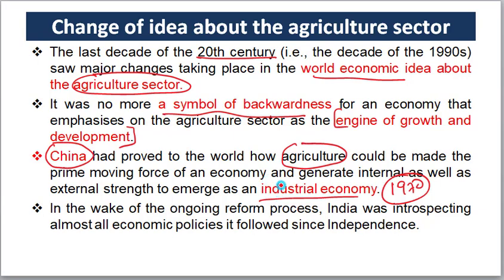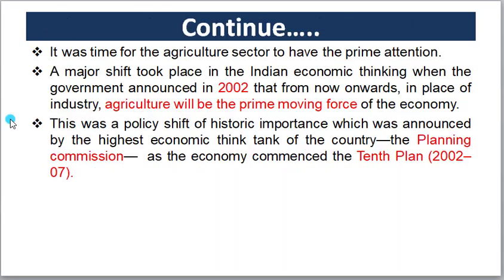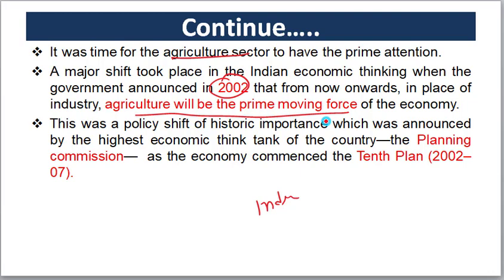By 1990 there was a shift — the agriculture sector regained prominence. By 2002, in the 10th Five-Year Plan, agriculture was declared the prime moving force of the economy. The Planning Commission made a major policy shift, recognizing agriculture's importance. Previously, industry had been the prime moving force, but this changed with the 10th plan in 2002.